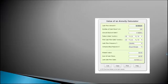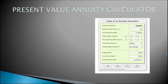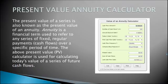The present value of a series is also known as the present value of an annuity. Annuity is a financial term used to refer to any series of fixed, regular payments or cash flows over a specific period of time.